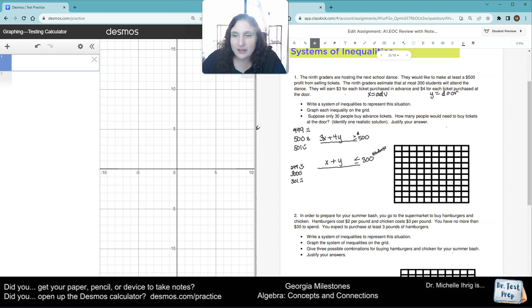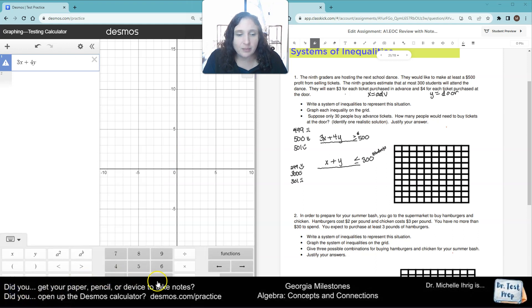Graph it on the grid. And then it says, suppose only 30 people buy advanced. How many need to get at the door? So now we've written our system. Now we're just going to type it in. 3X plus 4Y. Use the little calculator keyboard button to get greater than or equal to $500.